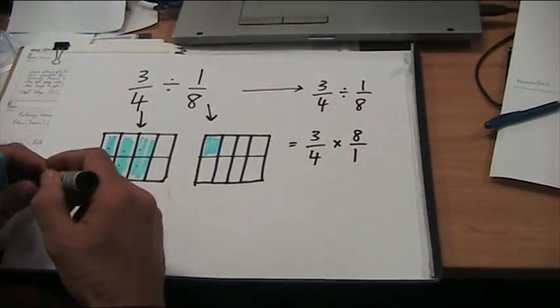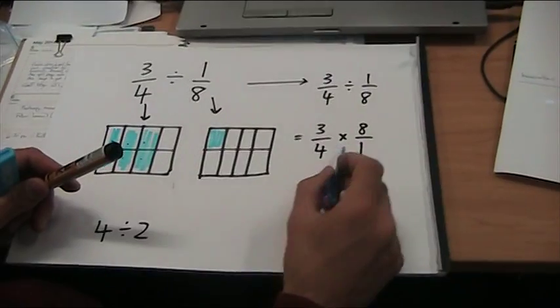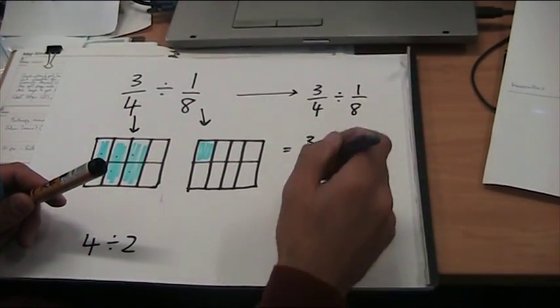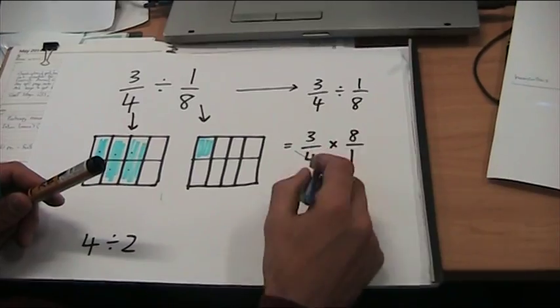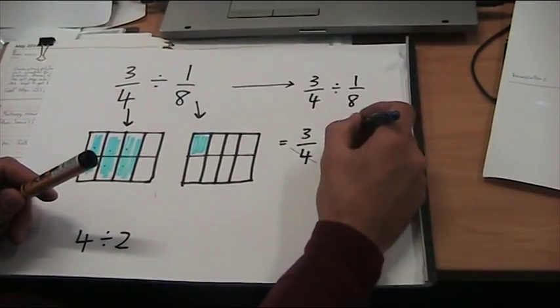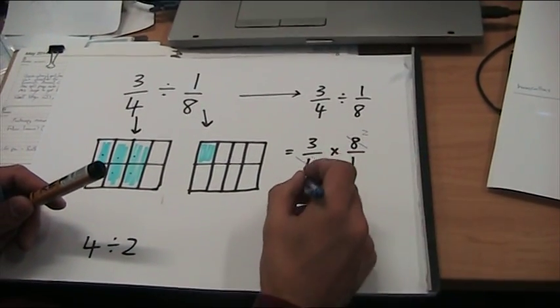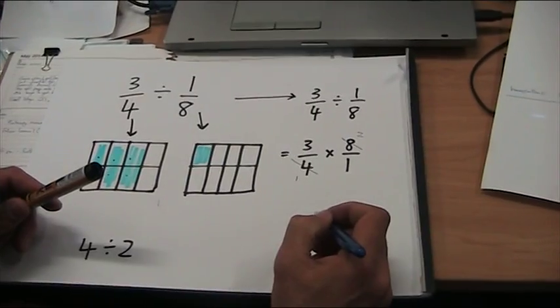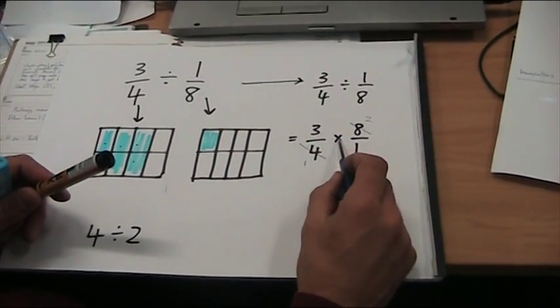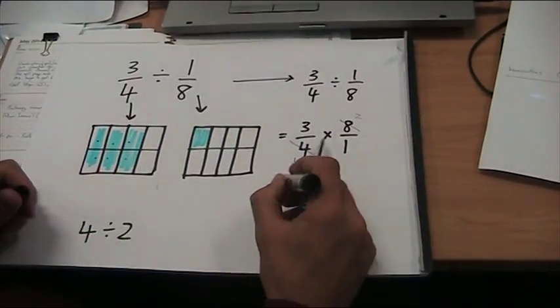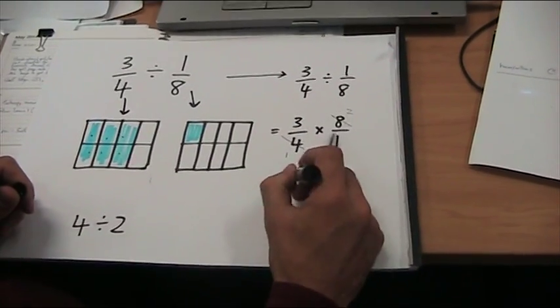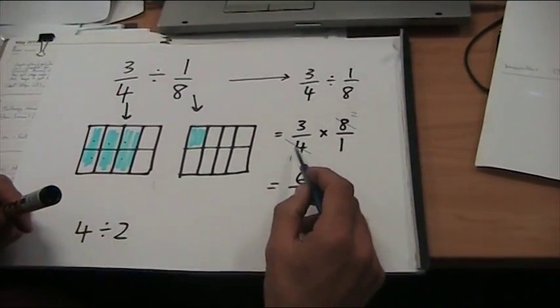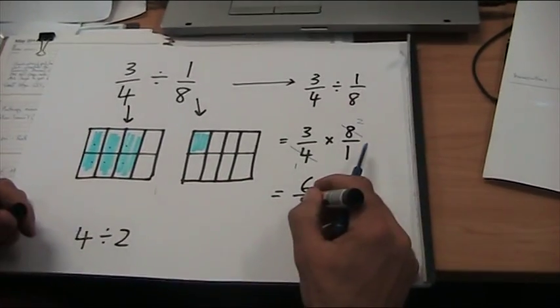And you can also simplify here. These two numbers I can simplify before I start actually multiplying across. So 4 goes into 8 twice. 4 goes into 4 once. So that's now 3 times 2, which equals 6. Right? And 1 times 1 equals 1.